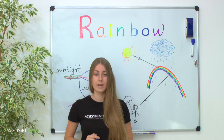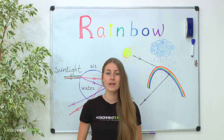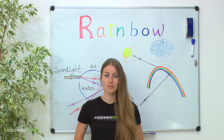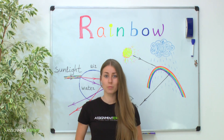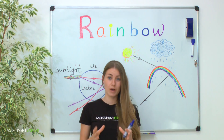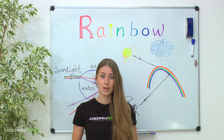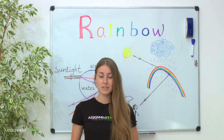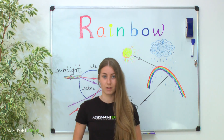Now let's explain why it happens. Rain is millions of small separate drops which fall from the sky. Each drop has a spherical shape, which may be distorted during its fall, but for simplicity let's consider them to be spherical.